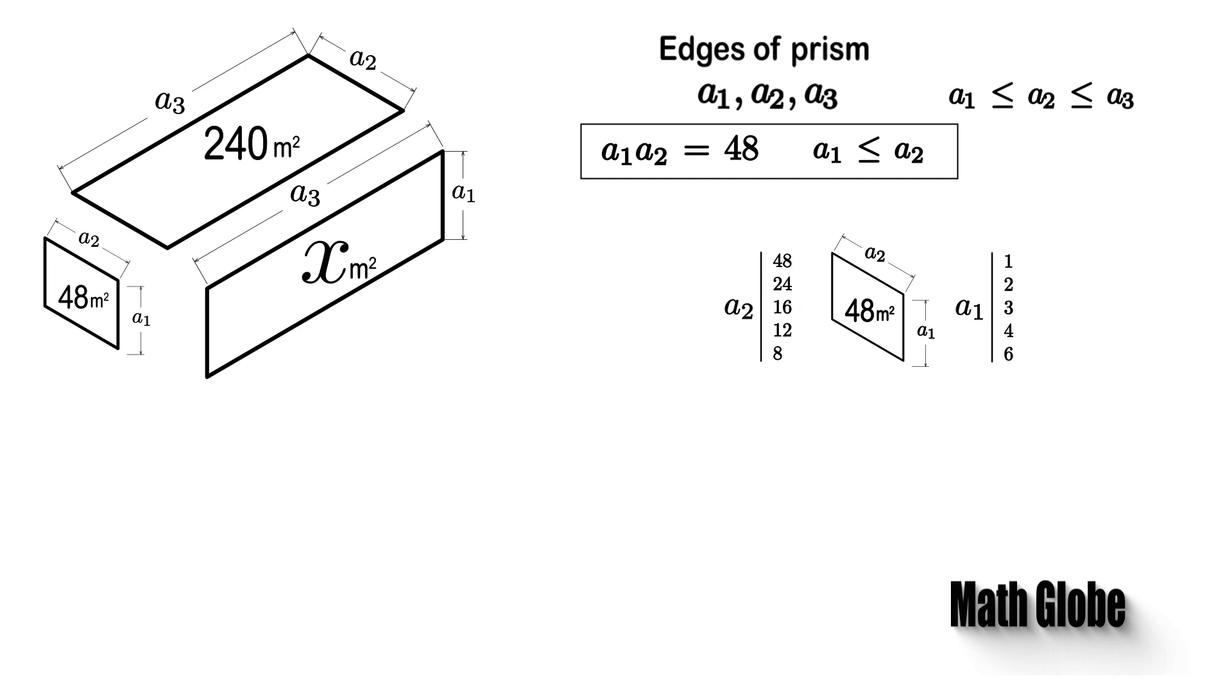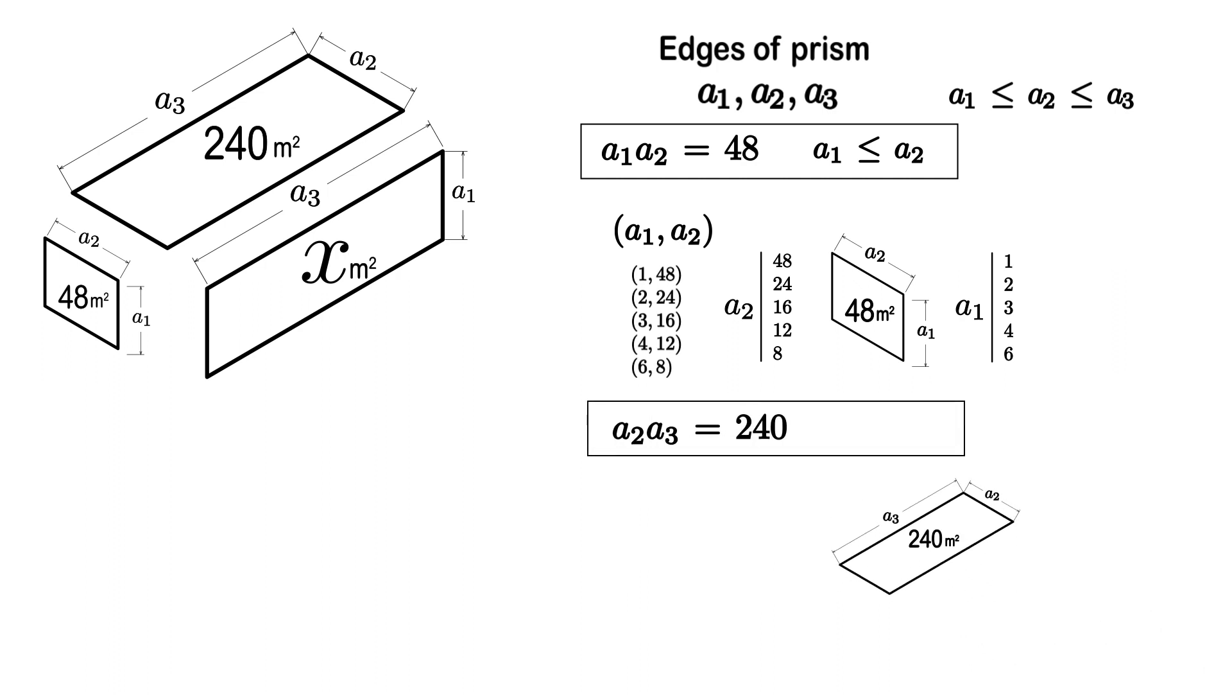Then let's factorize 48 and find all the possible values of a1 and a2. In the same way, we can factorize the face that is 240, using possible edge values of a2.